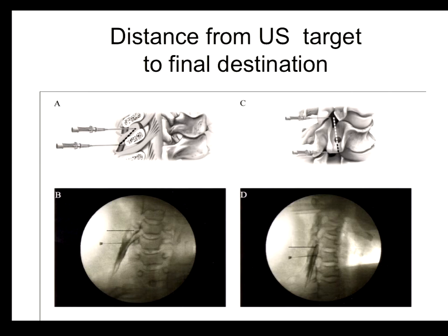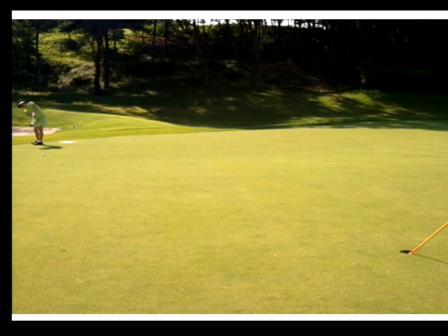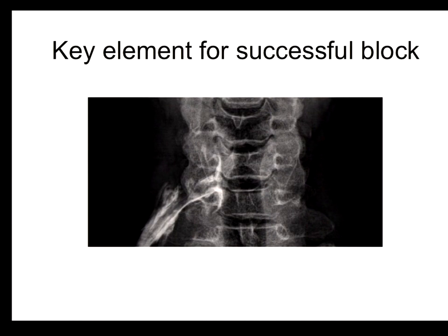You may suspect there is a gap between the ultrasound target and the final destination. I measured the distance between the CM target and ultrasound target by injecting contrast media after the ultrasound-guided block without moving the needle, then checking the CM in AP and oblique views. This data shows the distance between the ultrasound and CM targets, with the range most probably from 1.2 cm to 2.3 cm — quite far.